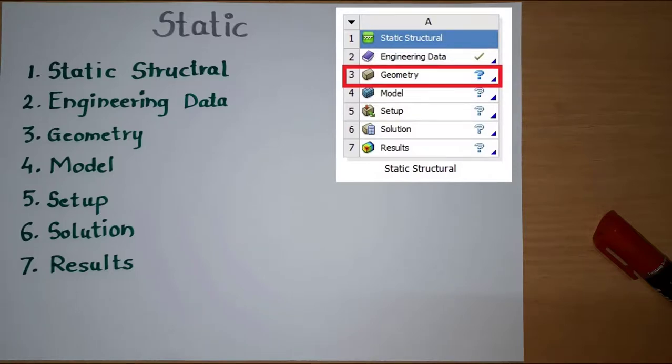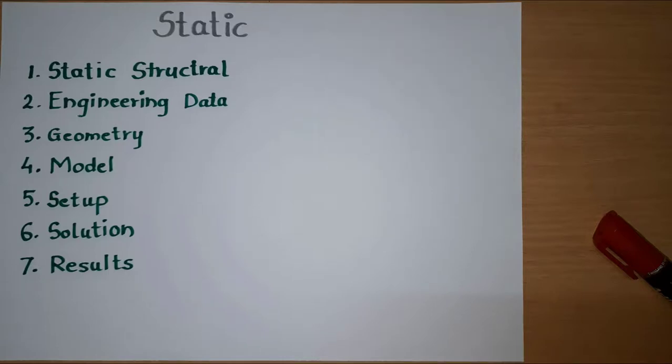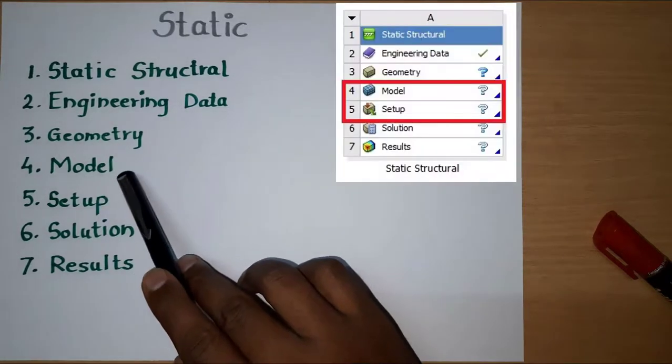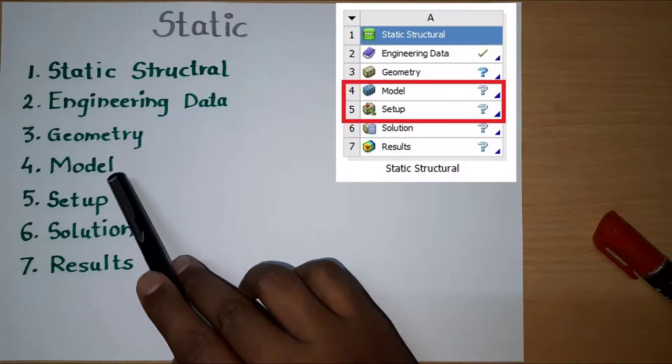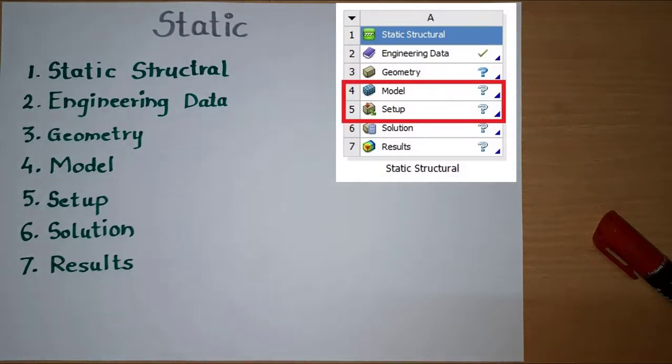Editing our model. In model step, various steps are involved. I will tell you in brief. We have to assign material, defining coordinate systems, giving the contacts and joints and performing contact tool results. Then it comes to heart of the analysis, that is, meshing and applying a boundary condition. That's it, up till now, this is called as a pre-processing.